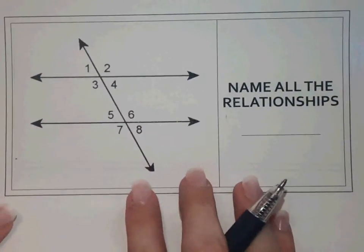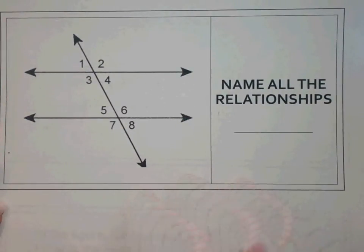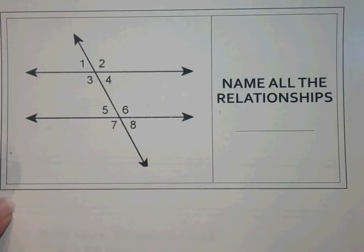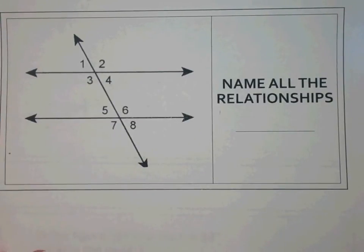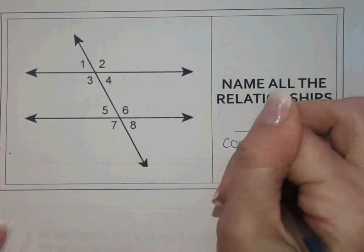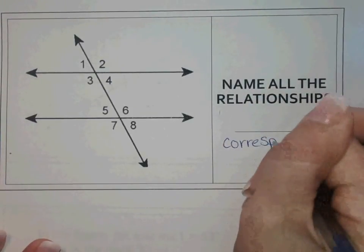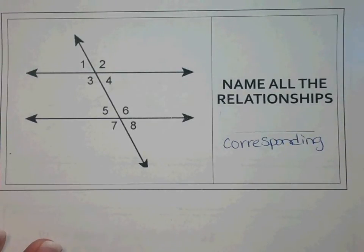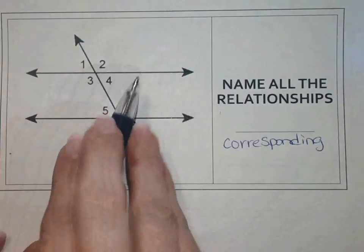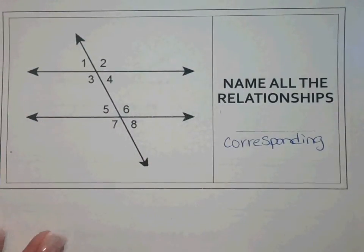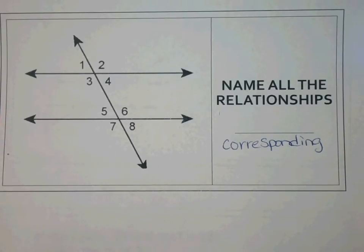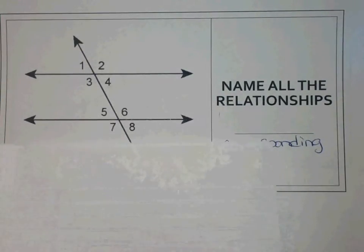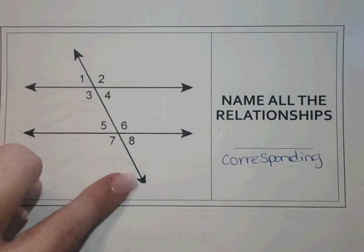Today we're going to look at naming all the relationships. We are going to start by looking at the corresponding angles. Corresponding means that you're looking at two sets of lines — the top parallel line and the bottom parallel line, crossed by the transversal.